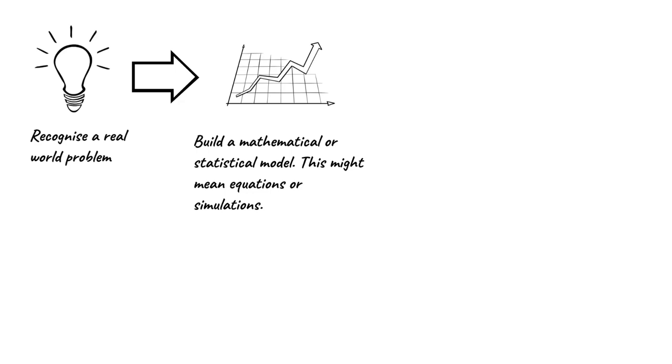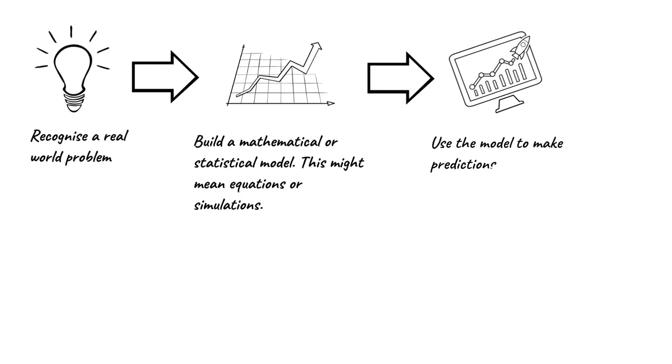For example, in COVID, we wanted to understand whether it was a droplet infection or airborne. What you can do is build models based on the two different assumptions and see how it spreads in the two different models. What you would do is use those models to make a prediction about what you would expect to see.